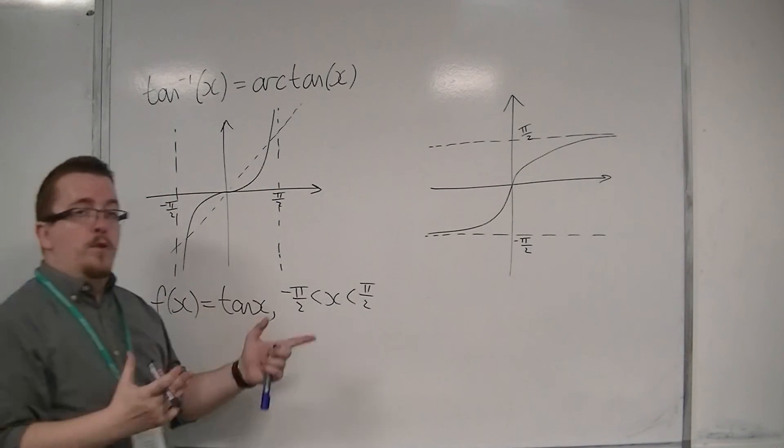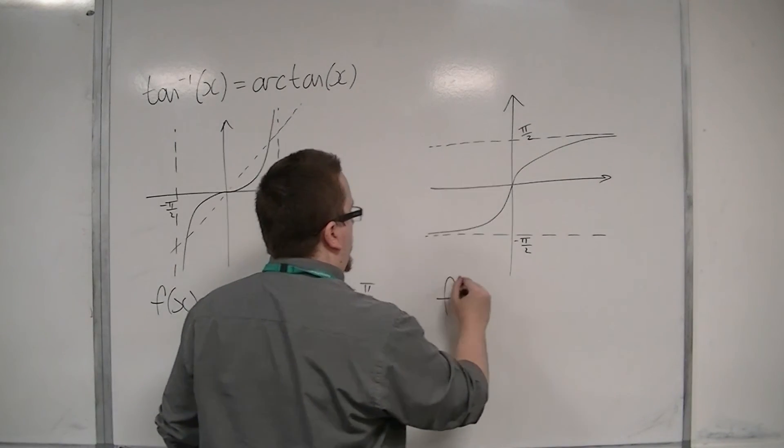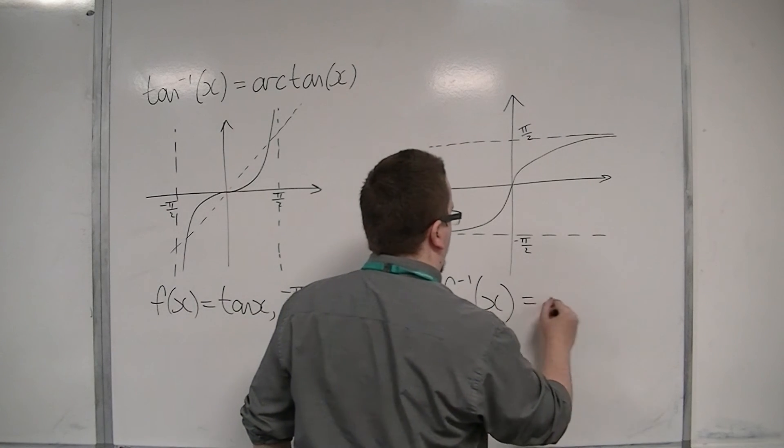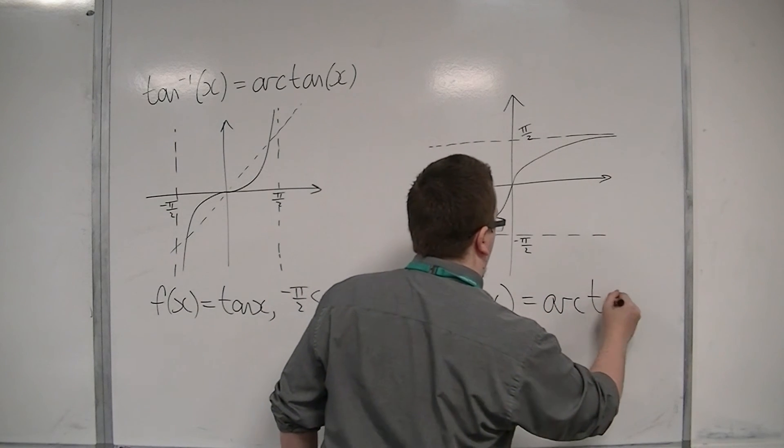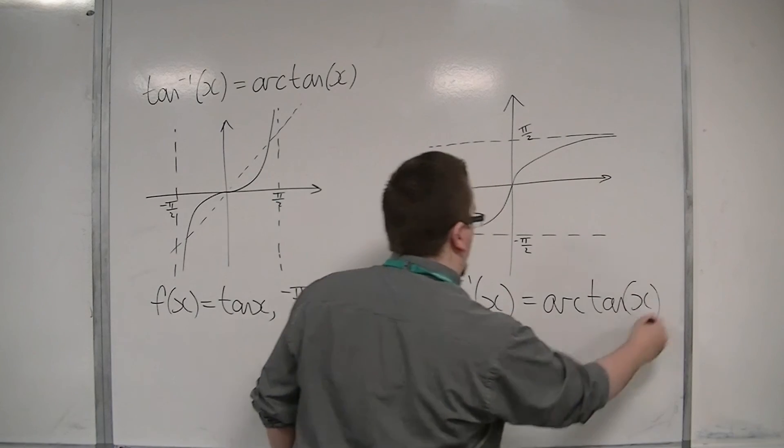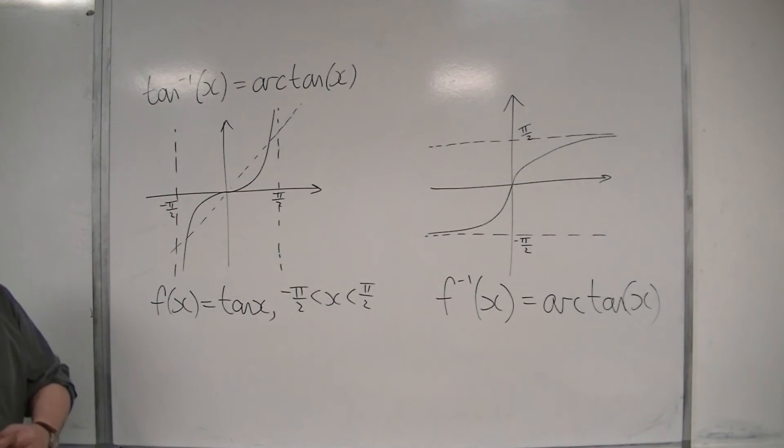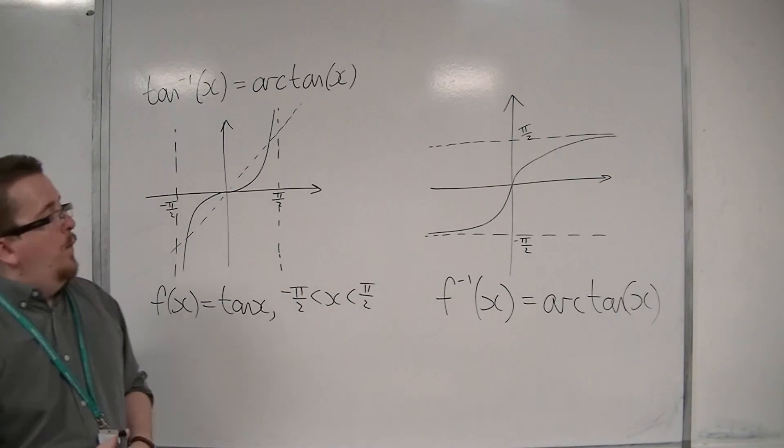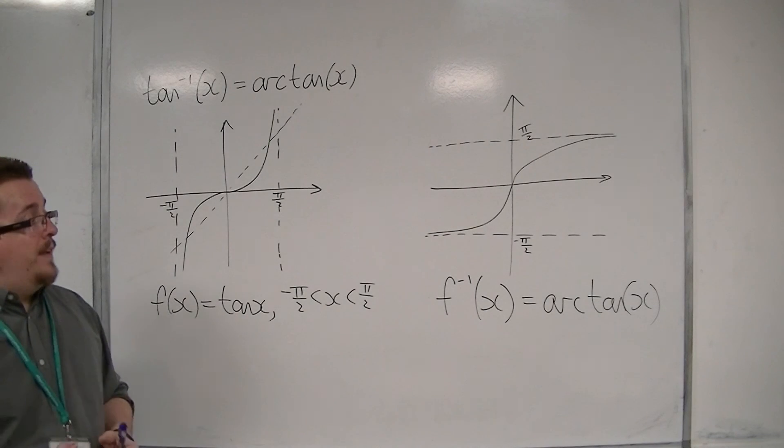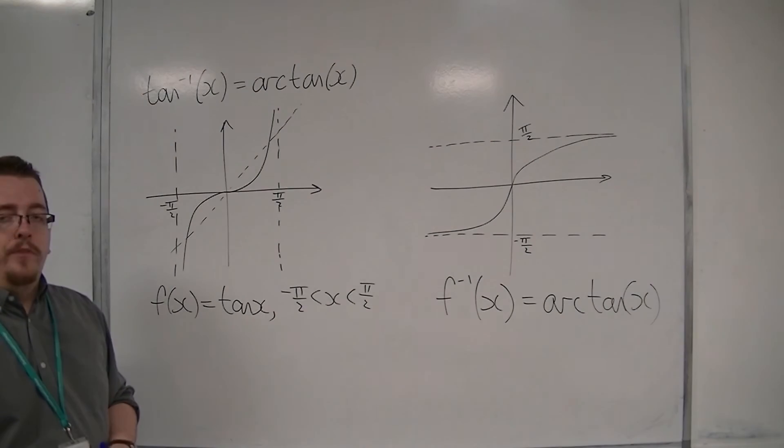And this would be arc tan. So it's got a domain where it has all real values of x and a range between minus pi over 2 and pi over 2.